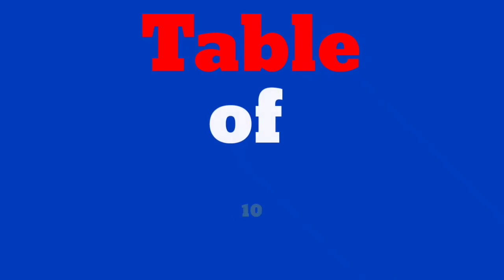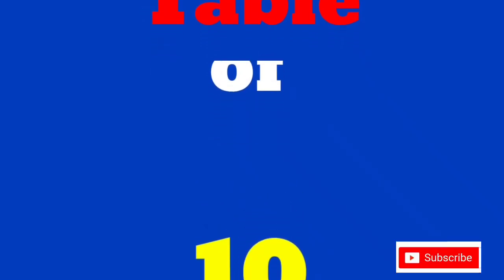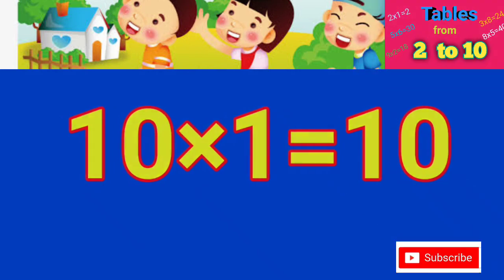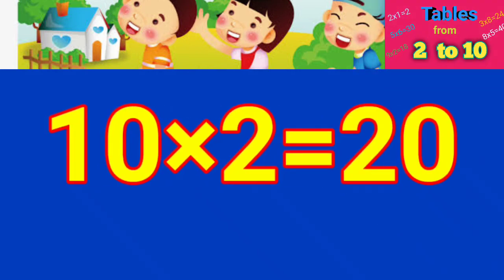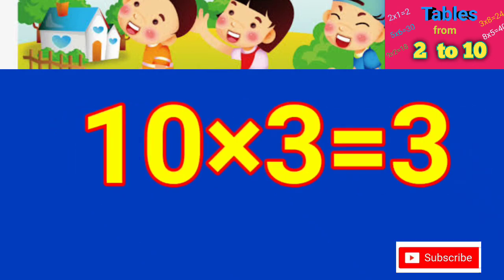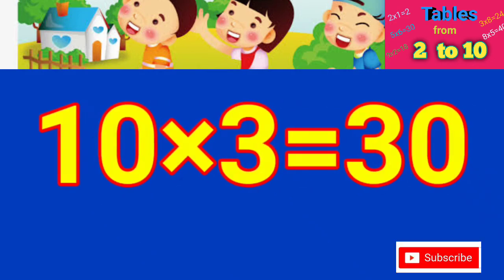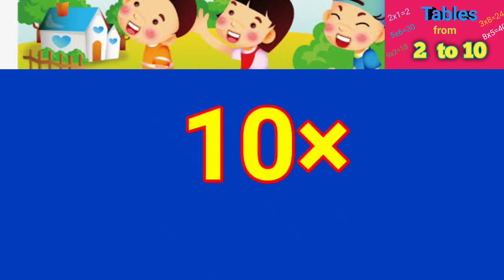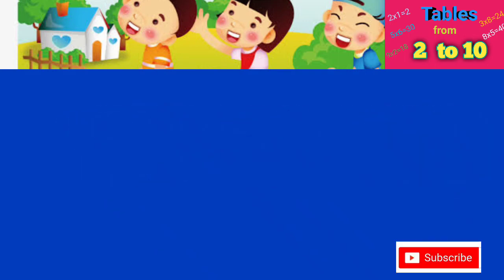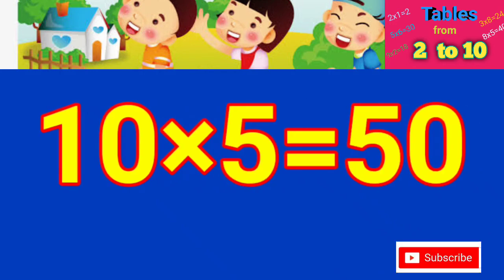Table of 10: 10×1=10, 10×2=20, 10×3=30, 10×4=40, 10×5=50.